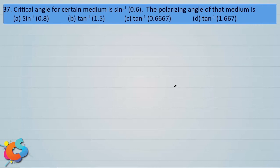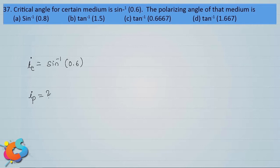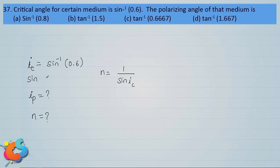We need to connect the critical angle and polarizing angle. The critical angle ic = sine inverse of 0.6, meaning sine(ic) = 0.6. The refractive index is related to critical angle by n = 1/sin(ic), so n = 1/0.6 = 10/6 = 1.667.